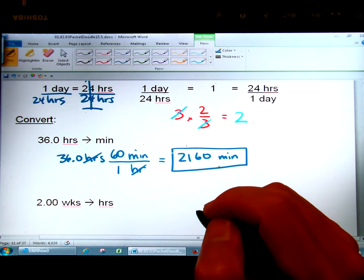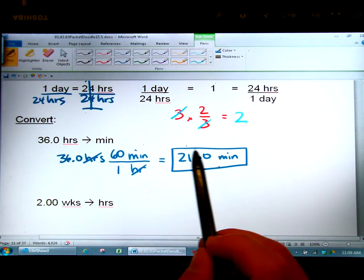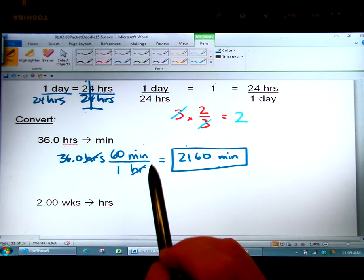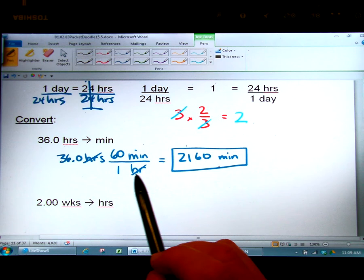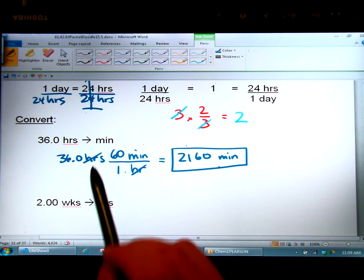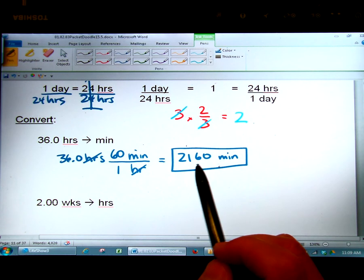As far as sig figs go we just use the sig figs of the starting number to see what the ending number is. Because the sig figs of a conversion factor do not affect us. This is not a measurement that we made. This 60 minutes over one hour. This is a definition. This is an exact number. So it's not a measurement that we're making. This was a measurement we made. So the sig figs of this will determine the sig figs of the answer. Which in this case has three.